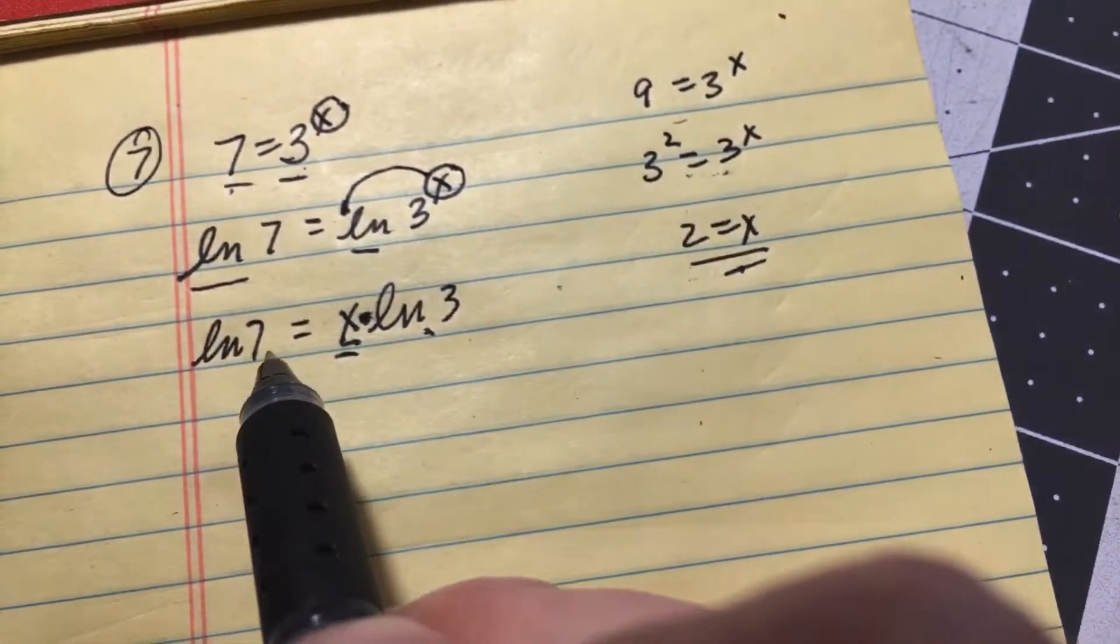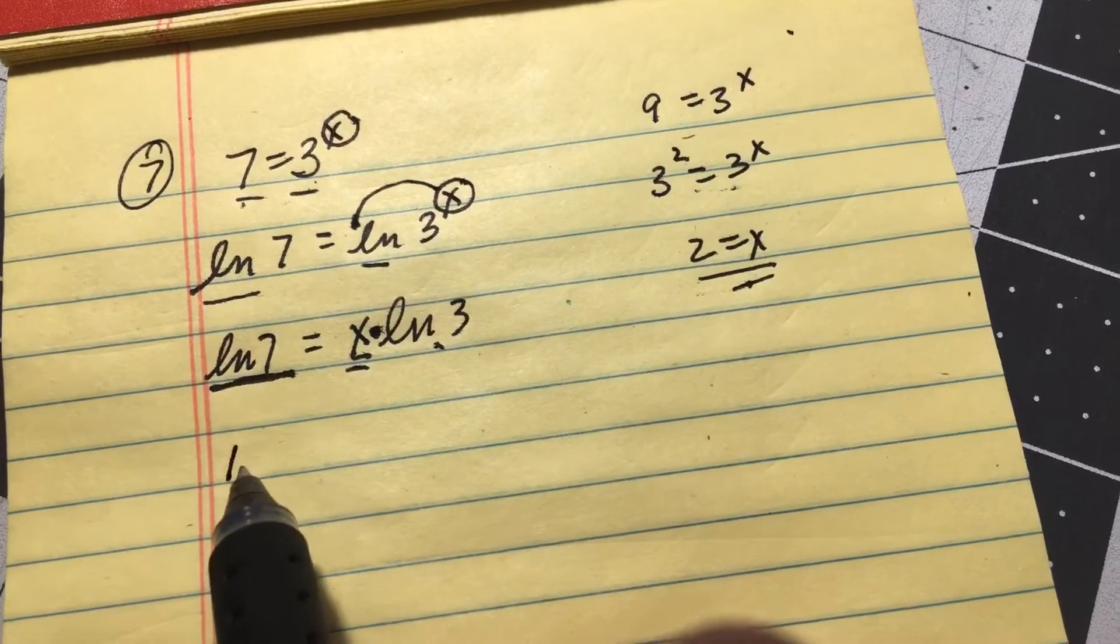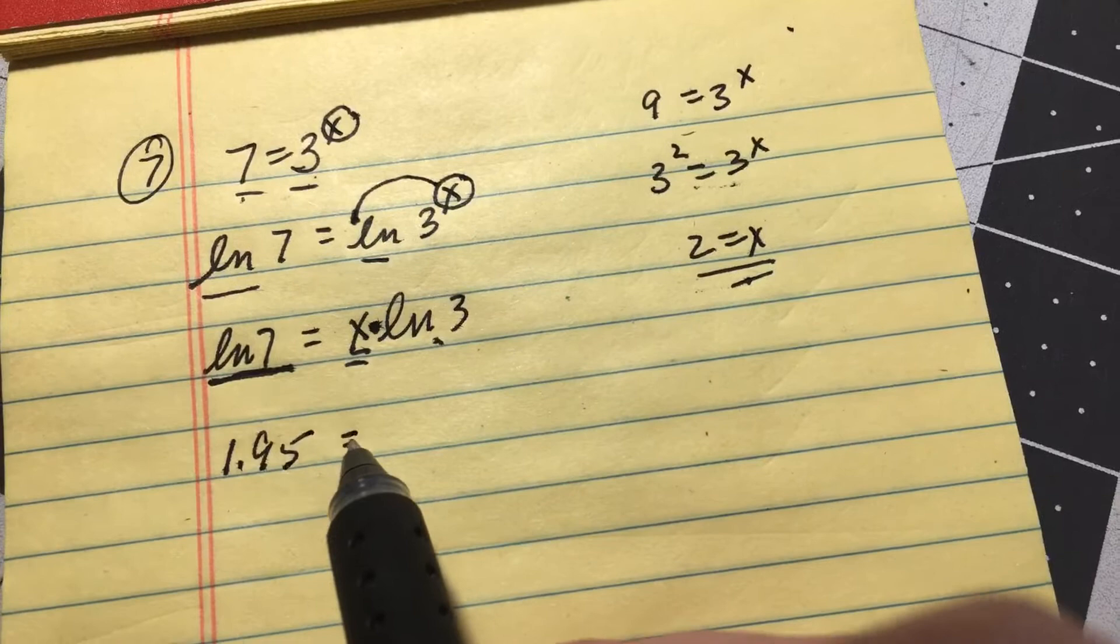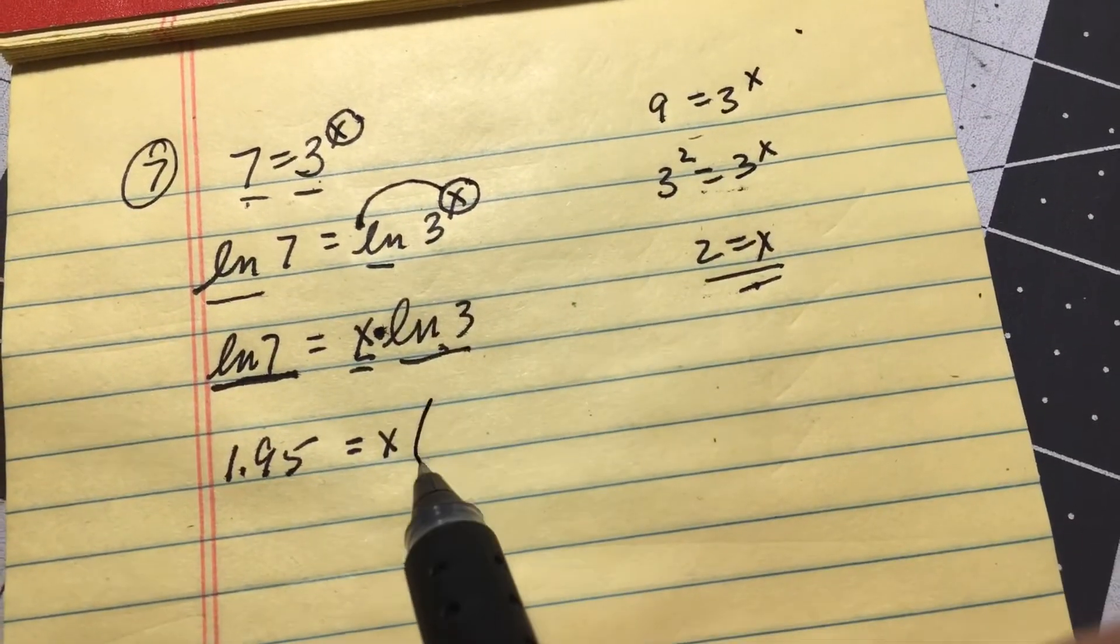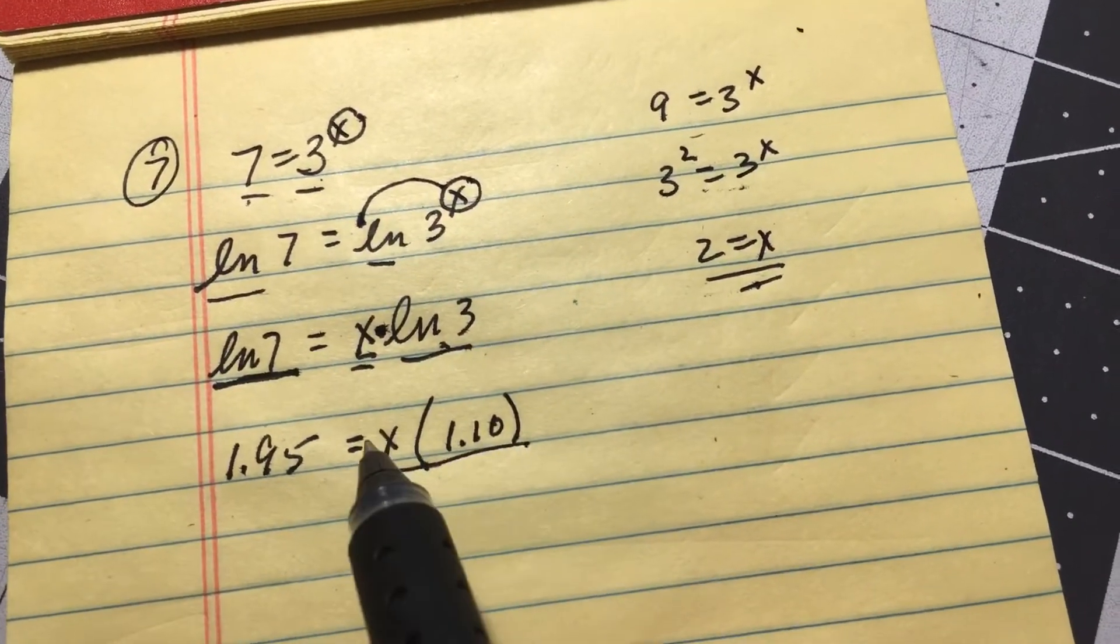of three. Okay, now I punch this natural log of seven into my calculator and I got 1.95. And I punch this natural log of three into my calculator and I got 1.10. Then to solve for x...